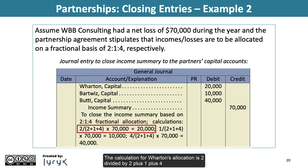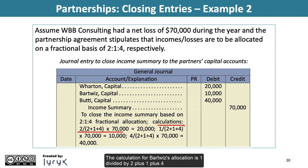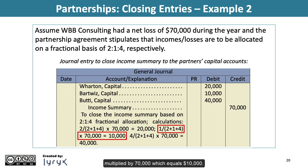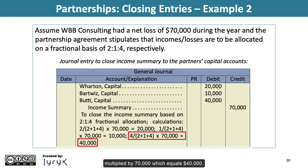The calculation for Wharton's allocation is 2 divided by (2+1+4) multiplied by $70,000, which equals $20,000. The calculation for Bartwiz's allocation is 1 divided by (2+1+4) multiplied by $70,000, which equals $10,000. The calculation for Beauty's allocation is 4 divided by (2+1+4) multiplied by $70,000, which equals $40,000.